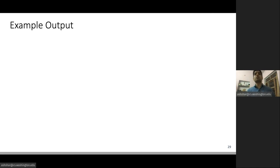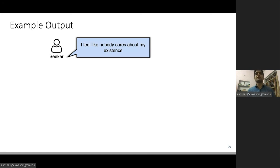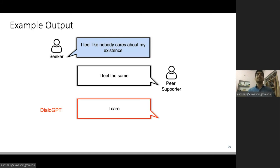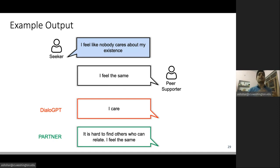Here I want to show you an example demonstrating our system. To a seeker post, 'I feel like nobody cares about my existence,' and an original response, 'I feel the same,' a model like DialoGPT can only rewrite it to 'I care,' which honestly is not that great. Whereas PARTNER, which is our model, can rewrite it to, 'it's hard to find others who can relate. I feel the same.' So the model is inferring the seeker's perspective from their posts, which makes the final output more empathic and potentially more helpful. There are more such examples in the paper. Do check that out.